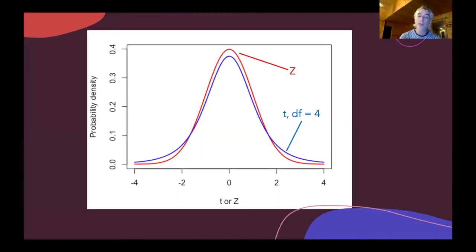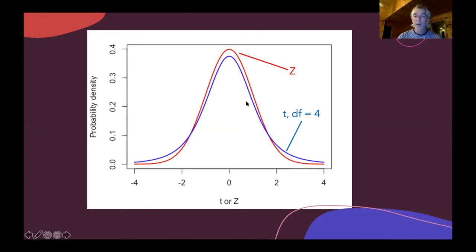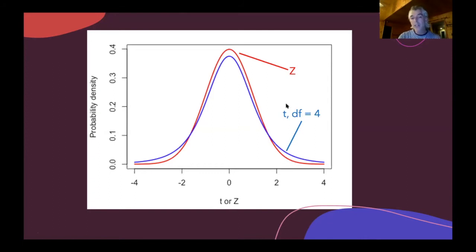The t-distribution is really similar to our z-distribution — they're shaped in a very similar way. Here I've depicted the z-distribution shown in red and a t-distribution for four degrees of freedom shown in blue. They're both centered around zero, both symmetrical, and both have a characteristic bell-like shape. But the shape is slightly different: as we get out towards the tails, the t-distribution has a little bit fatter tails than the z-distribution. This is why we need to use the t-distribution instead of the z-distribution when the standard deviation in the population is unknown.